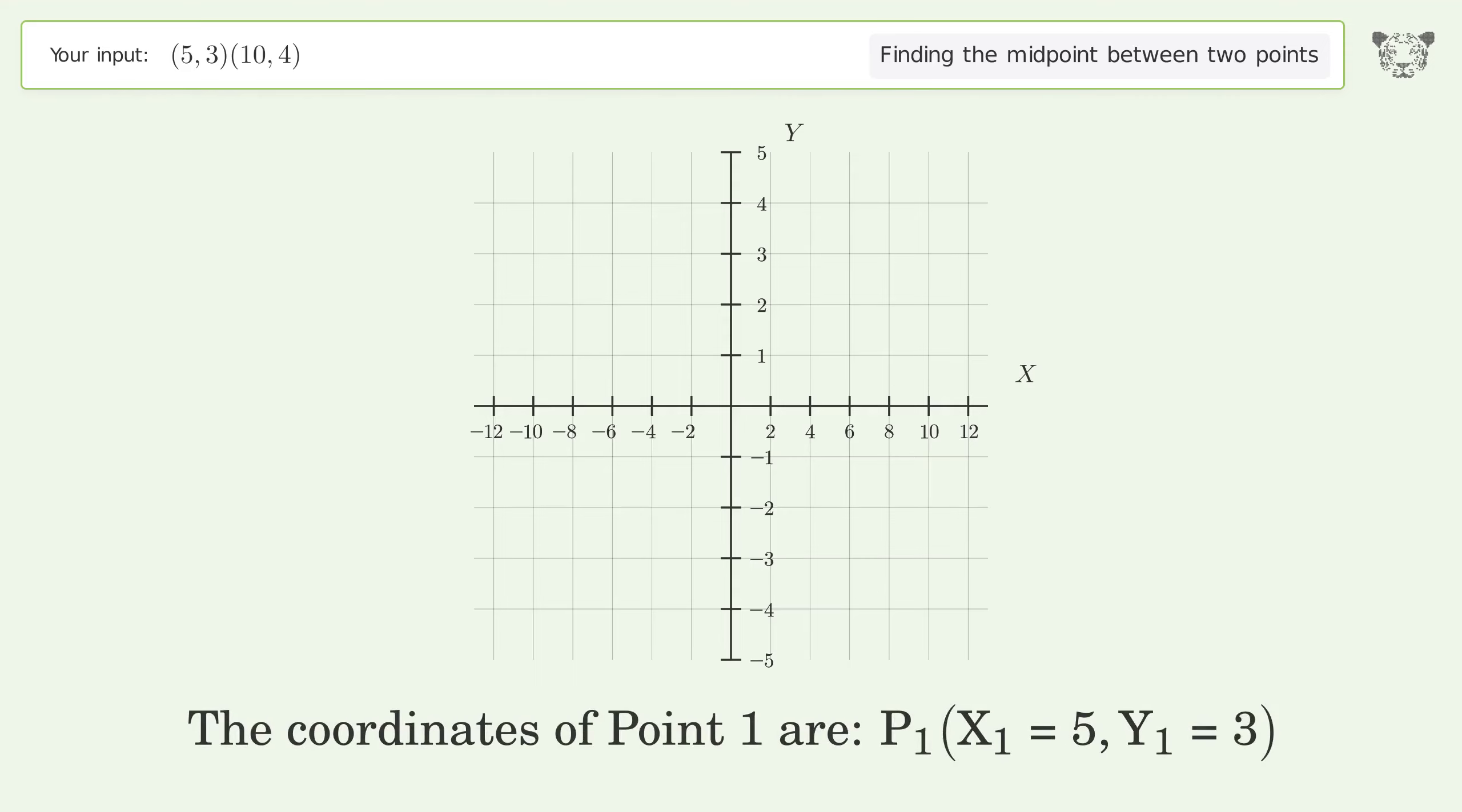The coordinates of Point 1 are x1 equals 5, y1 equals 3. The coordinates of Point 2 are x2 equals 10, y2 equals 4.